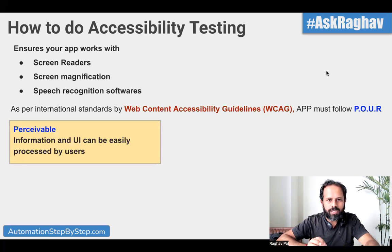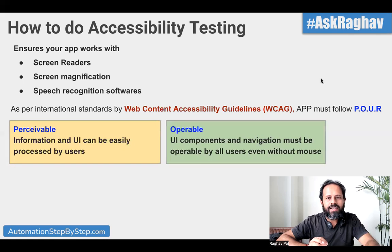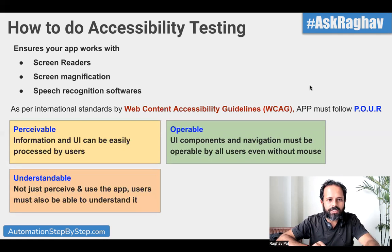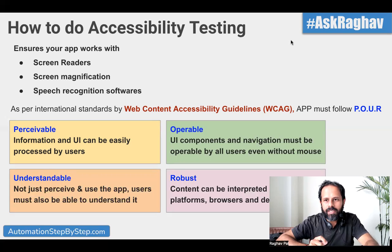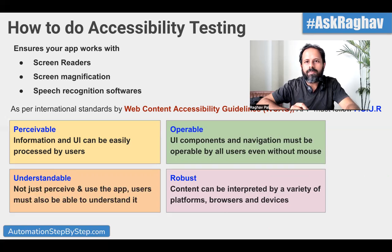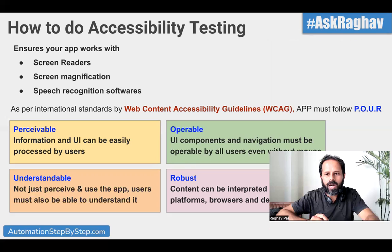The POUR standards are: P stands for Perceivable — our application should be easily processed by users with special needs. O is for Operable — people should be able to use our application without a mouse, navigating all content and pages using just the keyboard. U is for Understandable — users should not just be able to perceive but should also be able to understand the content. And R is for Robust — the content can be interpreted by a variety of platforms, browsers, and devices. We have to make sure all of this works with our application.